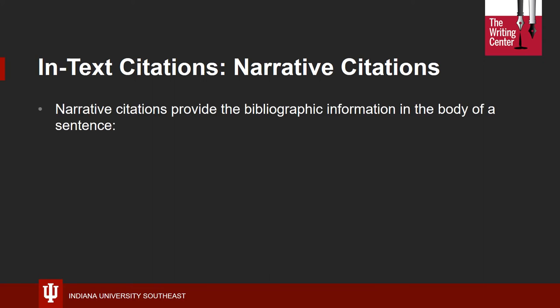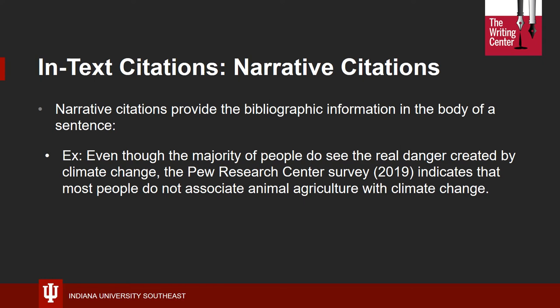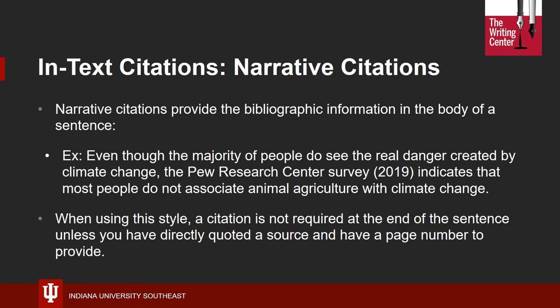APA provides guidance on two forms of in-text citations. The first is referred to as a narrative citation. Narrative citations bring up the bibliographic information, like the author or website, in the sentence itself. The Pew Research Center, for example, is considered the organizational author — they are named, and the year the research was published immediately follows in parentheses. Narrative citations also include signal phrases, such as "indicates that," "according to," and "as stated by." When using a narrative citation, you are not also required to cite the source again at the end of the sentence, unless you have directly quoted the source, in which case you must provide the page number after the quote in parentheses.